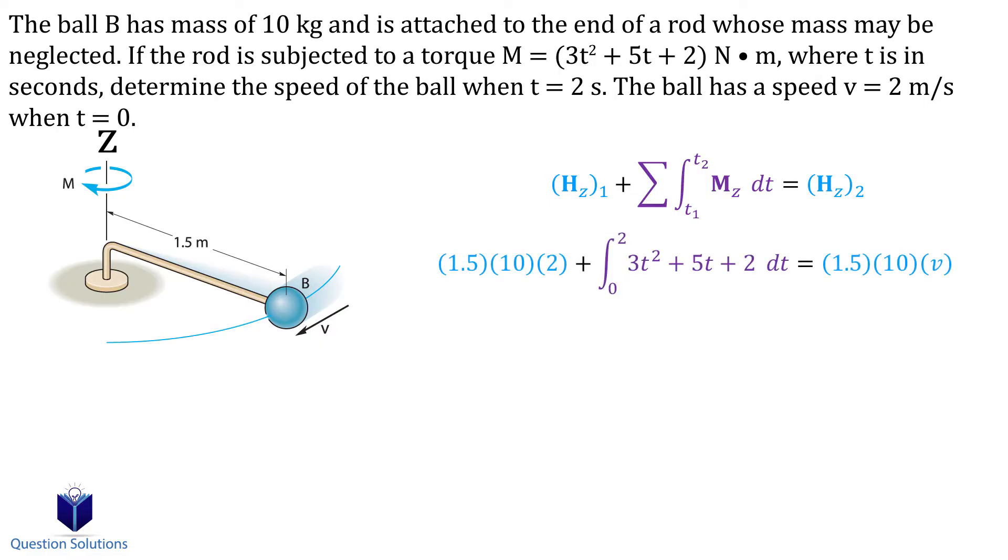The initial momenta can be found by multiplying the distance from the axis, so that's 1.5 meters. Then we multiply it by the mass, that's 10 kilograms. And lastly, we multiply it by the initial velocity, which is 2 meters per second.